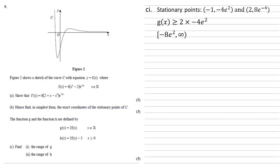Note that we've got the square bracket on the left to show that it can equal minus 8e squared, but we've got the round bracket on the right, because it can't actually equal infinity.